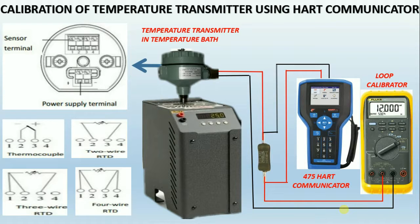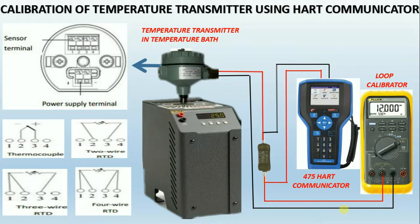After this, set the full range of the transmitter in the temperature bath and check the corresponding 20 milliamps. If it is not showing the corresponding milliamps, then adjust 20 milliamps by doing the upper sensor trim using HART.